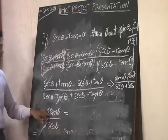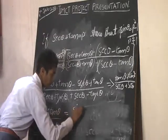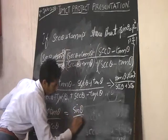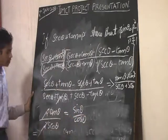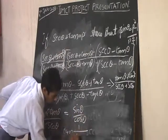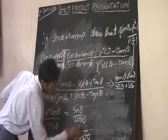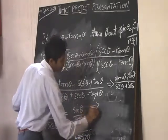We know that tan theta as a fraction is sine by cosine. And sec theta as a fraction is 1 by cosine. Cosine, cosine gets cancelled. The answer is sine theta.